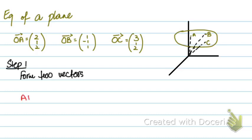AB is OB minus OA, so (1-2, -1-1, 1-2), which gives (-1, -2, -1). That's one vector. I'll form another vector, AC.